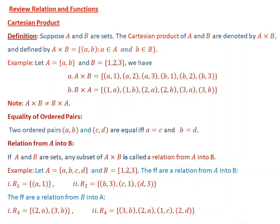Let us start from a review of relations and functions. We will look at the definitions of relations and functions, beginning with the Cartesian product. Suppose A and B are sets; the Cartesian product of A and B is denoted A cross B, defined as the set containing the ordered pair (a, b) where a is the first coordinate, a is an element of A, and b is an element of B.